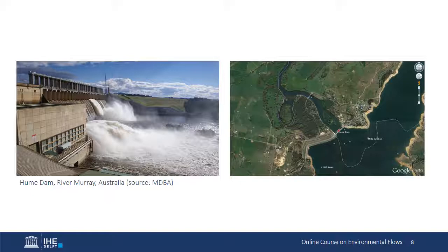Hume Dam is used for flood mitigation, hydropower, irrigation, water supply, and most recently environmental conservation. As a result of the purchase of environmental water, a significant amount of the water in Hume Lake is for the environment. Consequently, the operating rules for the dam were modified in February 2017 to formally incorporate environmental water releases. A description of these rule changes is in the additional reading material for this unit.